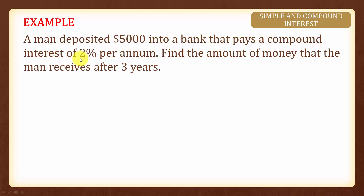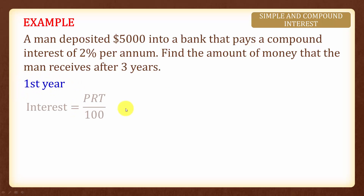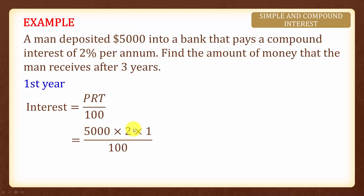The bank pays compound interest of two percent per annum — once again, per annum means per year. Find the amount of money that the man receives after three years. For the first year, you receive an interest of five thousand dollars times two percent times one, divided by one hundred. For the first year the man will receive one hundred dollars interest.